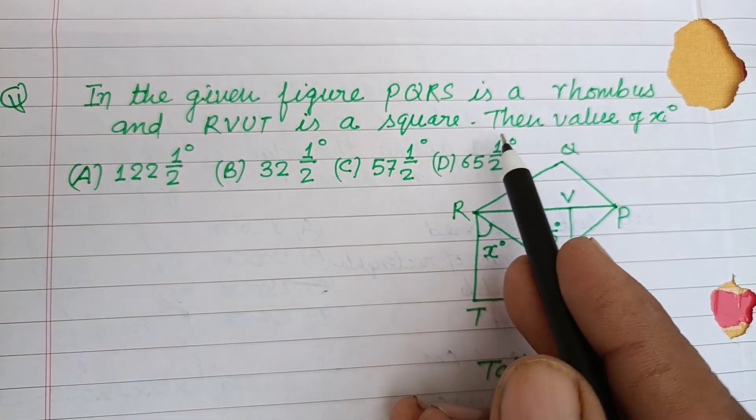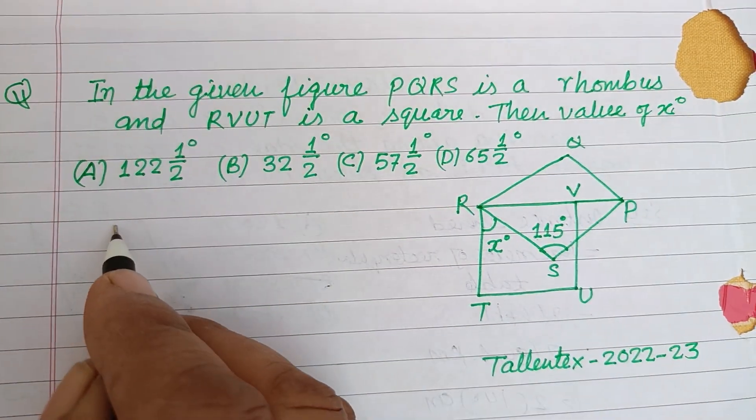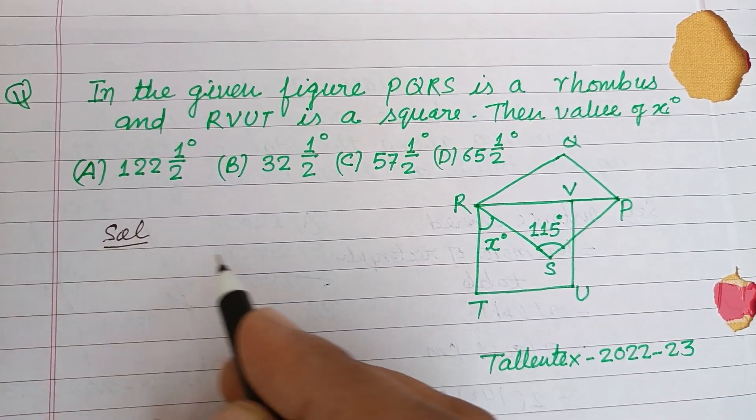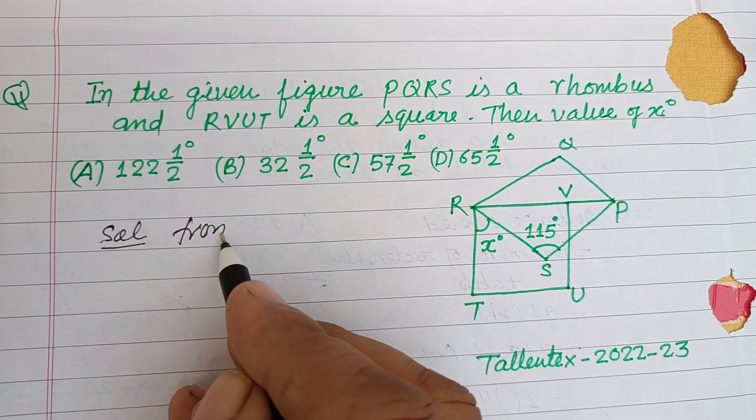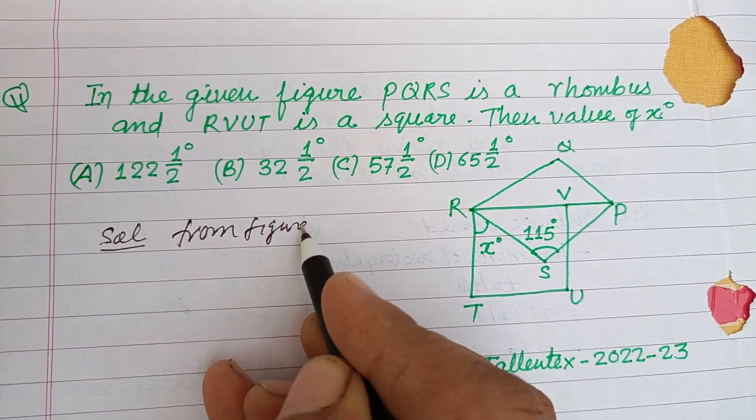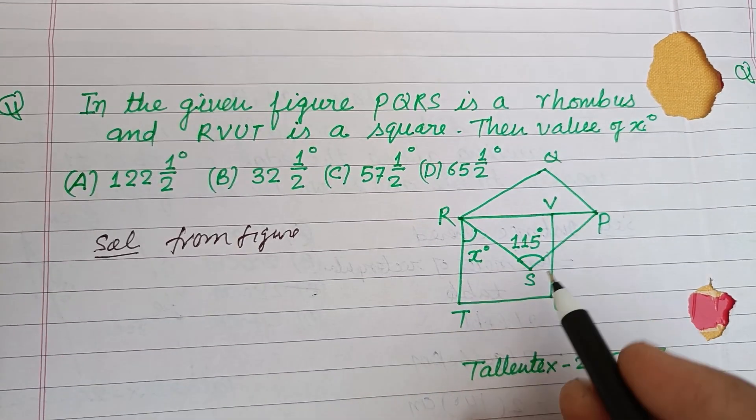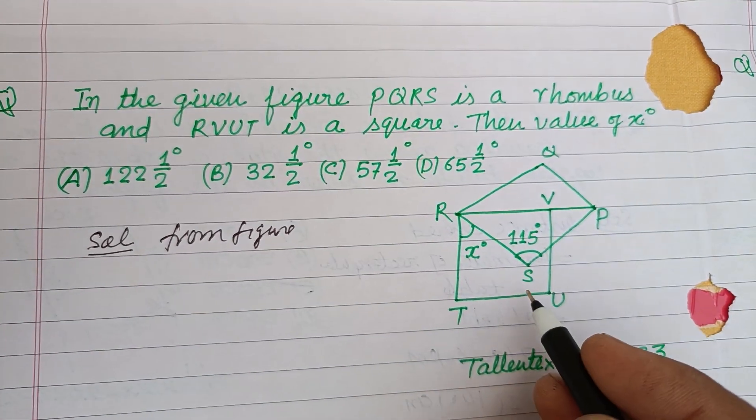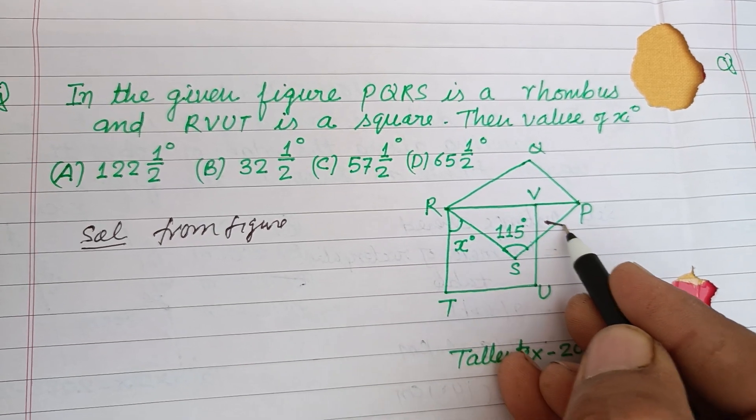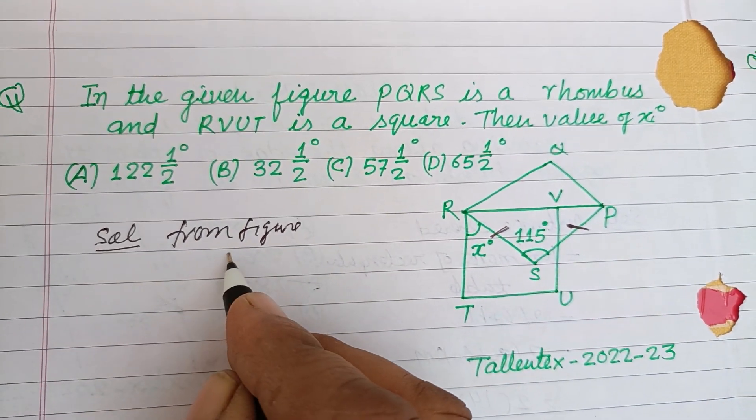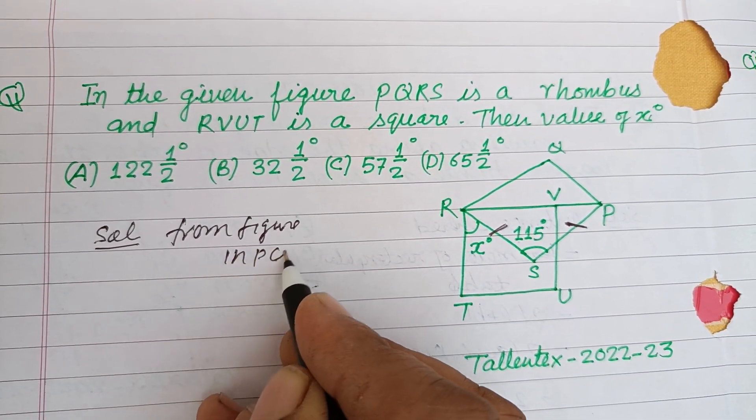From the figure, PQRS is a rhombus, so all sides are equal. This part is equal to this in PQRS.